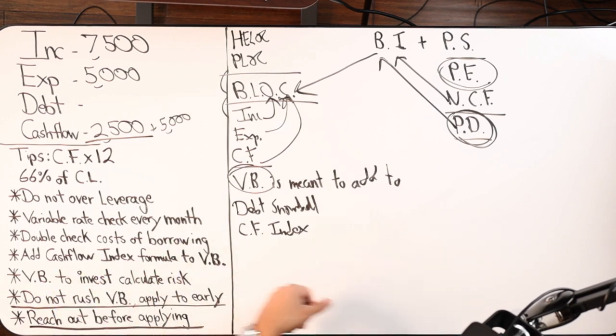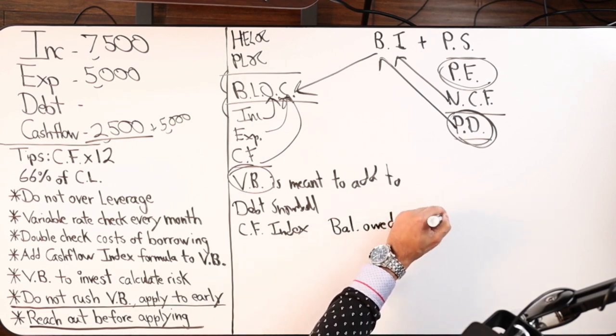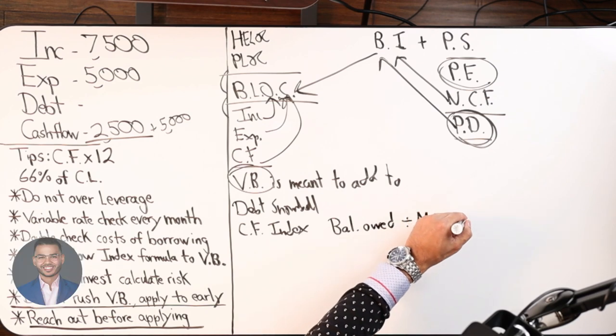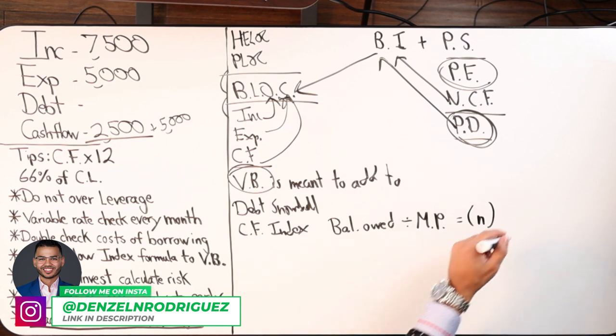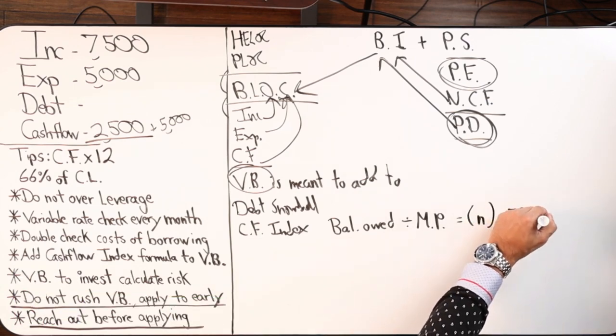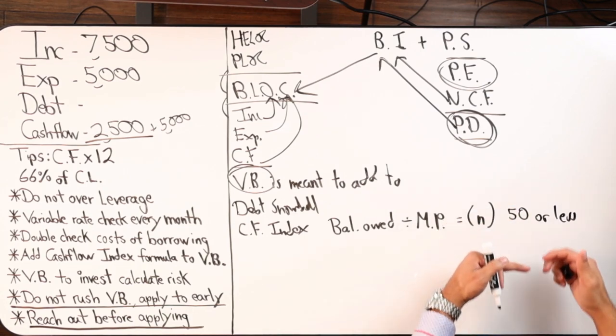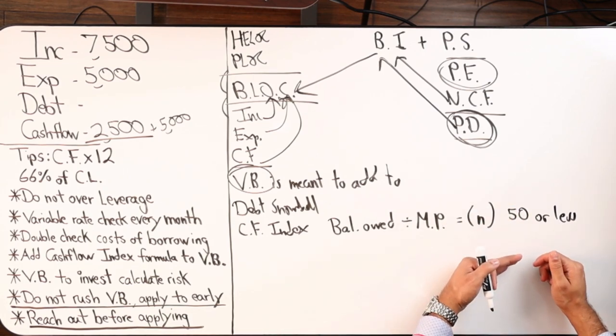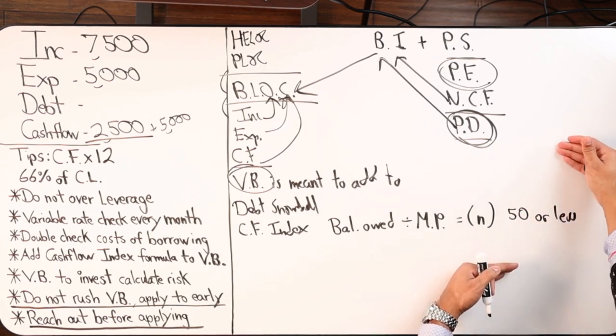Go ahead and add cash flow index formula to velocity banking. What is cash flow index formula? Here it is: balance owed divided by monthly minimum required payment equals a number. If that number is 50 or less, it is going to be an attractive debt to go after. If it is above 50, it is going to be an unattractive debt to go after.